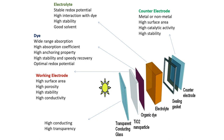The components of a practically utilized dye-synthesized solar cell are: a counter-electrode of metal or non-metal with high surface area, high catalytic activity, and high stability; a sealing jacket; an electrolyte with stable redox potential, high interaction with dye, high stability, and good solvent properties; an organic dye with wide range absorption, high absorption coefficient, high anchoring property, high stability, speedy recovery, and optimal redox potential; a titanium dioxide nanoparticle working electrode with high porosity, high stability, and high conductivity; and a final transparent conducting glass layer with high conductivity and high transparency.